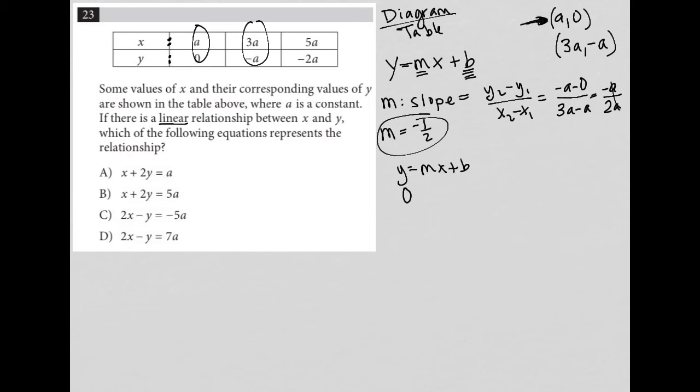You can choose either one you want, but this, I think, is the easiest. So I plug in zero for Y. I plug in negative one half for M because that's what we just found M to be. And I plug in A for X, right, because again, that comes from the ordered pair. And then I have my plus B. So then if I added one half A to both sides, I'd end up with one half A equals B. So there's my B value.